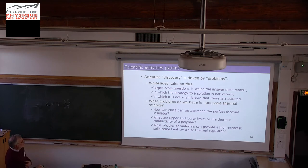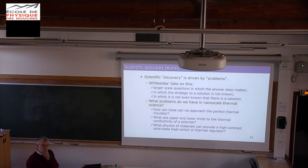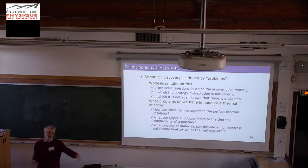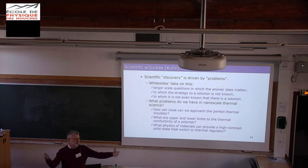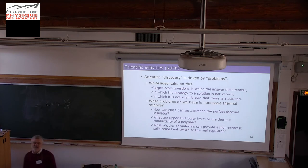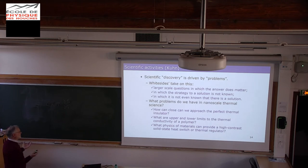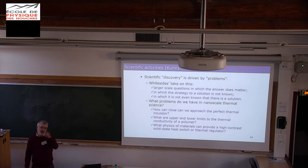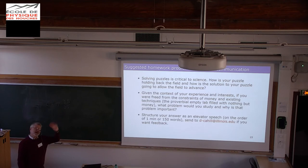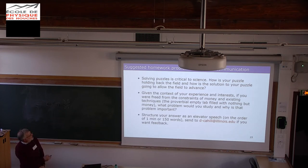For me, the 'problems' I wanted to talk about today are things like: how close can we approach the perfect thermal insulator? What are the upper or lower limits to the thermal conductivity of polymers? We know a lot about crystals — they're periodic and we can use Bloch's theorem. But if I have a disordered material, a polymer, other kinds of bonding and structure, how do we understand those things? Or what physics and materials can provide a high-contrast switch for heat or a regulator that responds to temperature? If you're working on a puzzle, how is your puzzle holding back the field and how will solving it allow the field to advance?